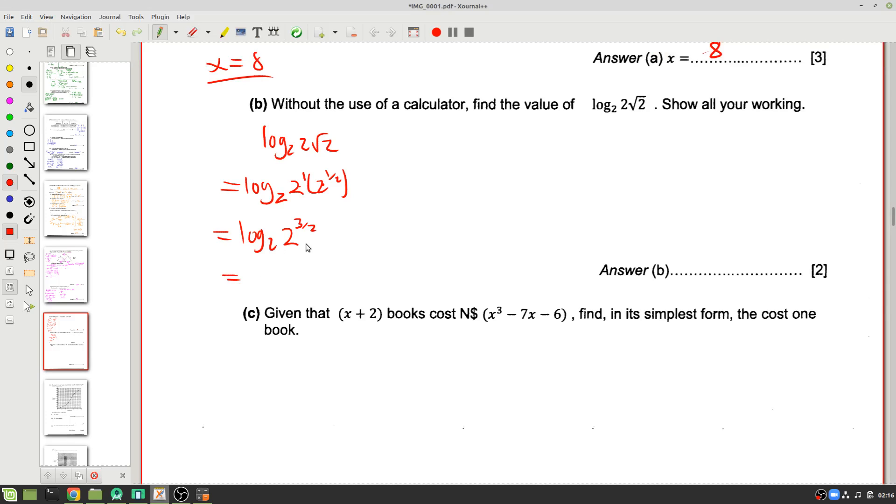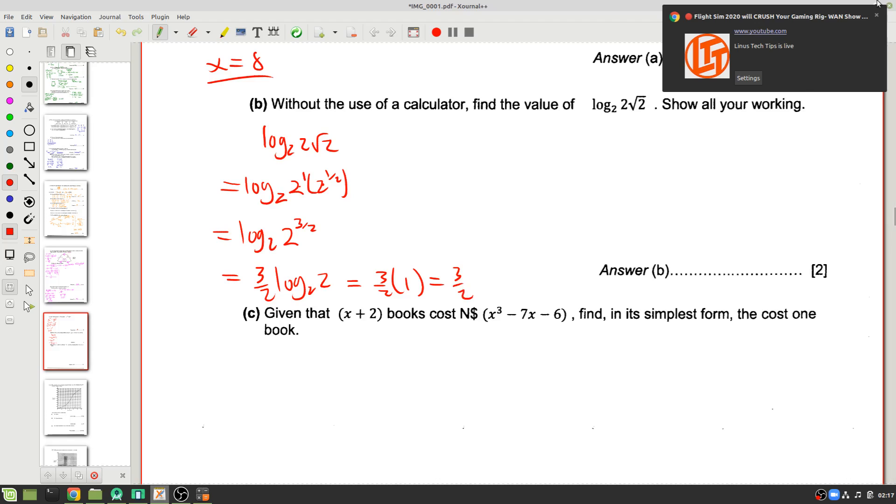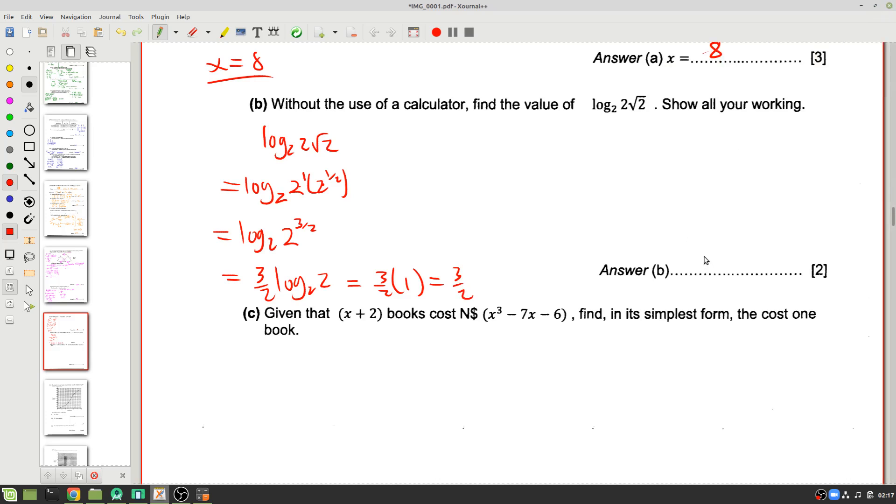And then we can say, well, we know with logs we can take the exponent and move it to the front as a coefficient. So we can take the exponent to the front, and leave our log 2 base 2. Now, something else we know is that any log number to its own base, like log 2 base 2 or log 5 base 5, that's just 1. So we've got 3 over 2 times 1, which is just 3 over 2. So our answer here is 3 over 2, or 1.5.